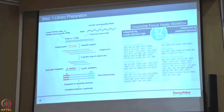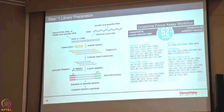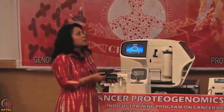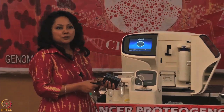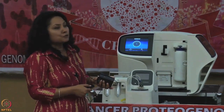Moving to the next slide, here is the library preparation workflow using the OncoMine Focus assay, which has 52 genes — all oncogenes — covering hotspot mutations, CNV gains, and fusion drivers. It is well known in cancer genomics that you cannot only look at single nucleotide variations or only at insertions and deletions. If you are looking at genomic aberrations you have to look at them in totality — SNVs, CNV gains or losses, and fusion drivers.